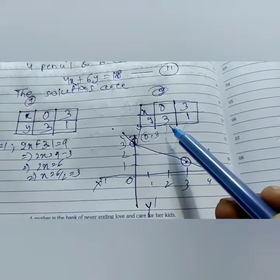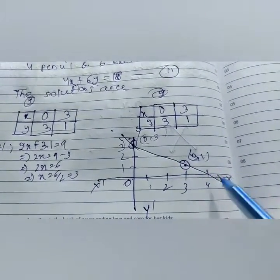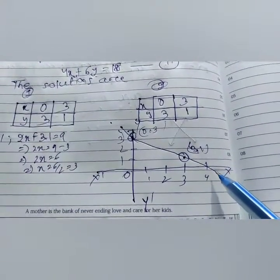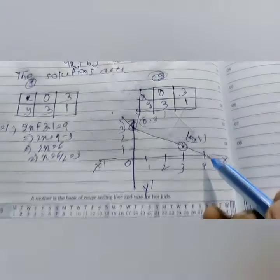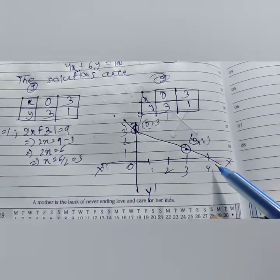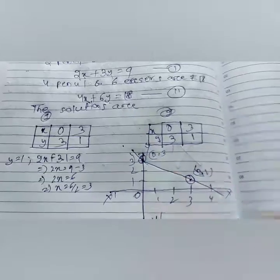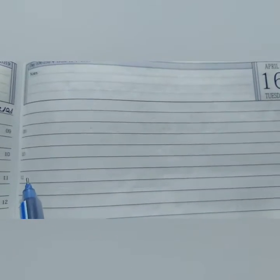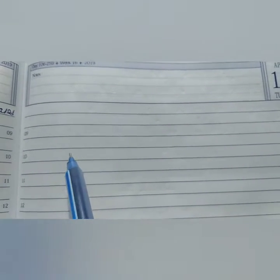For the second equation, the solutions are also (0, 3) and (3, 1) — the same as equation 1. So on the graph, the second equation also lies on the same line. This is the condition of coincidence. We have represented the pair of linear equations in two variables both algebraically and graphically.